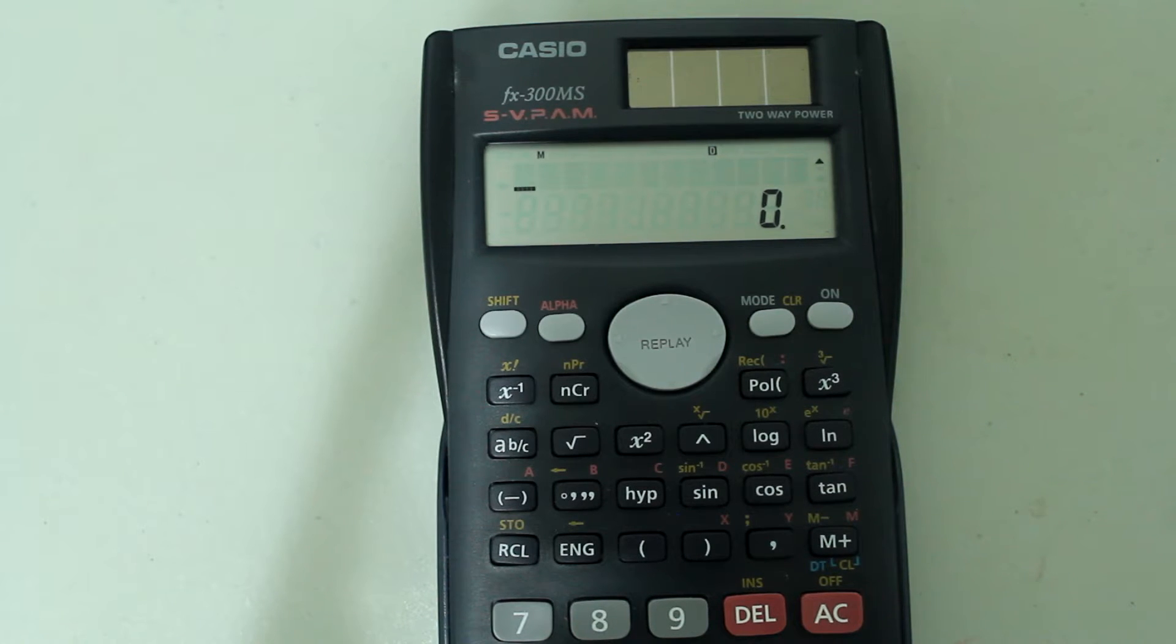Hey guys, this is a video in my scientific calculator tutorial series. In this video, I am going to show you how to convert from degrees to radians and vice versa using your Casio scientific calculator. The model I have here is a Casio FX-300MS, but this should be applicable to similar model calculators. Without further ado, let's get to it.